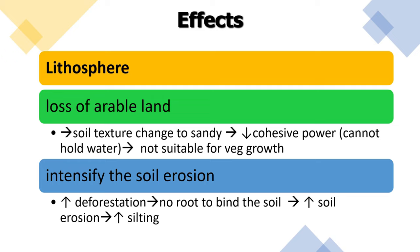The effect on the lithosphere includes loss of arable land because soil texture changes to sandy, reducing the cohesive power and water retention capacity of soil, making it unsuitable for vegetation. The second effect is intensification of soil erosion, which increases due to deforestation — with no roots to bind the soil, erosion and saltation increase.